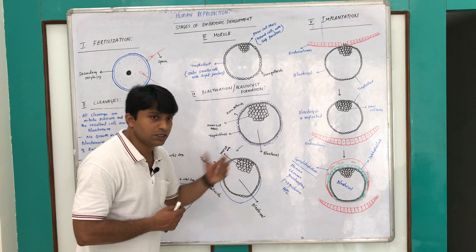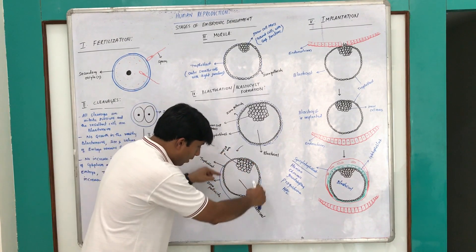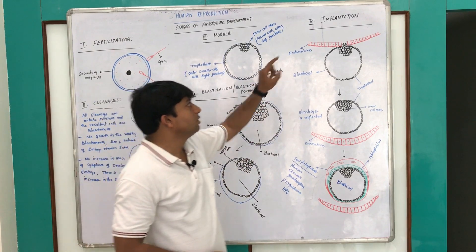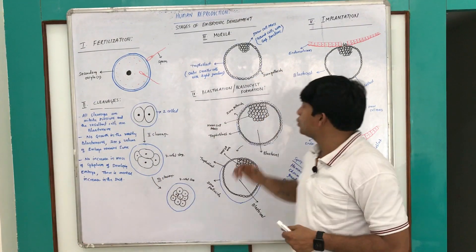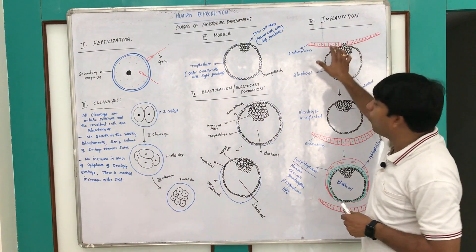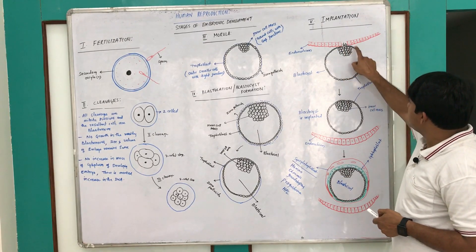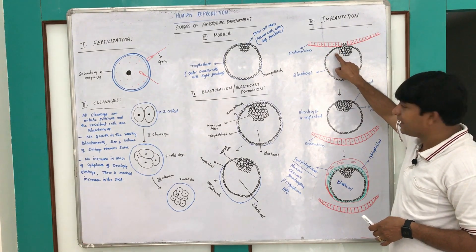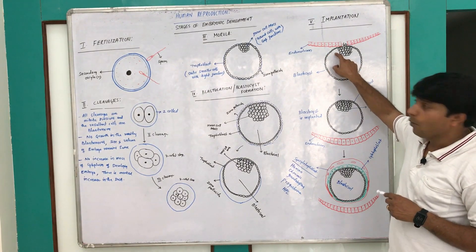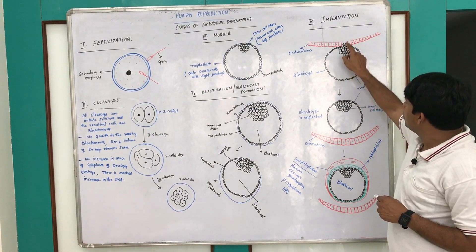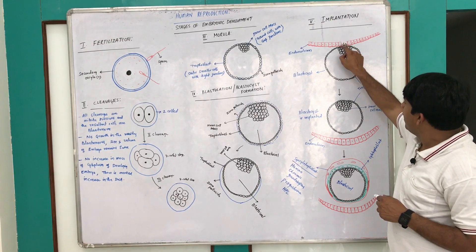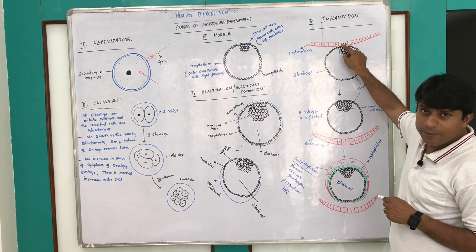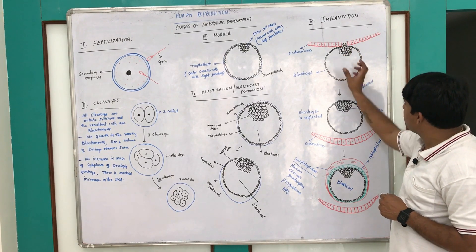Once the blastocyst squeezes out, the trophoblast cells will get directly exposed to the endometrial wall. Now these trophoblast cells aggressively divide and they secrete lytic enzymes. With the help of these lytic enzymes, the trophoblast cells will digest the endometrial wall and lyse the endometrial wall, so that this blastocyst is completely buried in the endometrium.